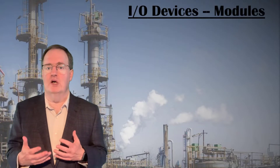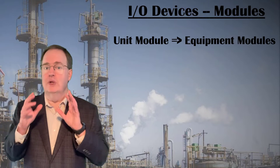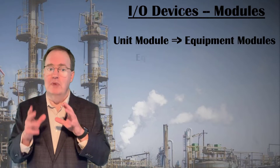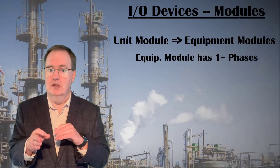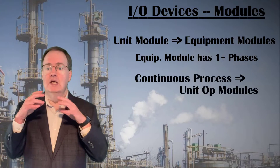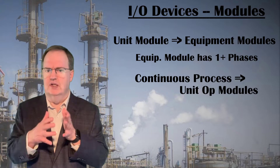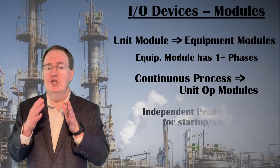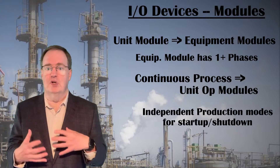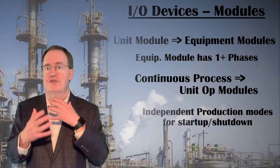When cataloging all of the IO devices in a batch unit or a continuous process, subdivide the IO in a batch unit module into equipment modules following the S88 standard by function. Remember that each equipment module will have one or more phases that do a useful task. Break a continuous process into one module per unit operation — so if you have a continuous reactor followed by two distillation columns, divide the IO into those three modules. This will be useful as each module in a continuous process will likely have an independent state or production mode for startup and shutdown.